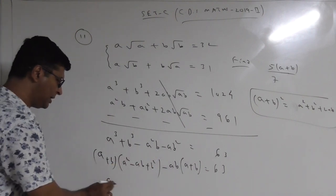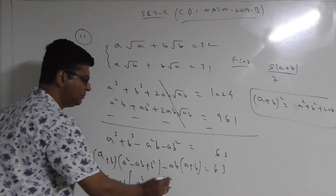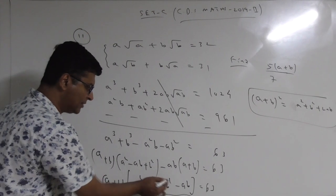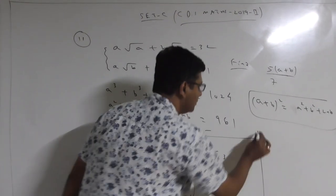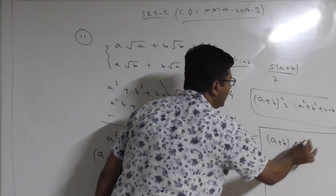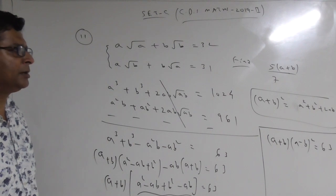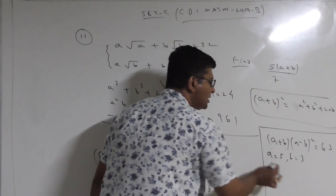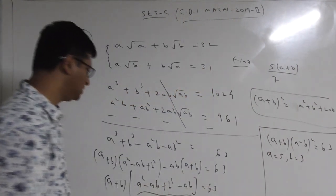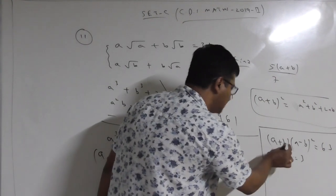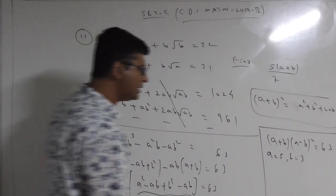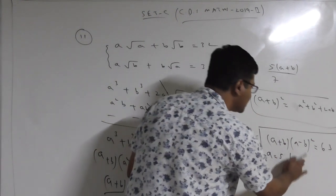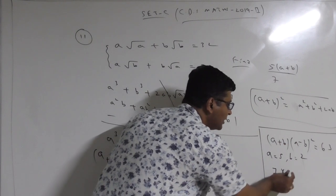From here, break A³ + B³ = (A+B)(A² - AB + B²), and take common -AB from the remaining terms, giving (A+B). Take (A+B) common overall. From the remaining you get A² - AB + B² - AB, which becomes the formula A² + B² - 2AB = (A-B)². So finally: (A+B)(A-B)² = 63. Now think of possible values: if A = 5 and B = 2, then (5+2)(5-2)² = 7 × 9 = 63. ✓